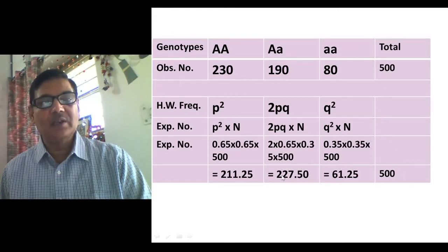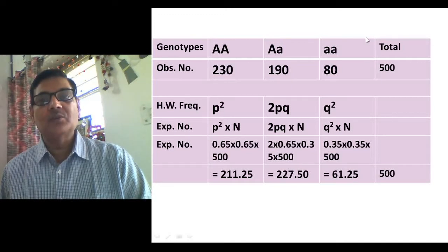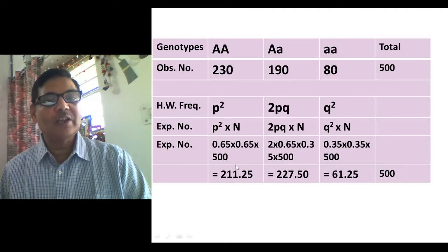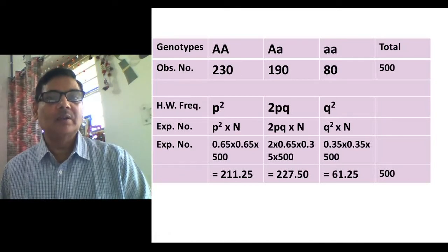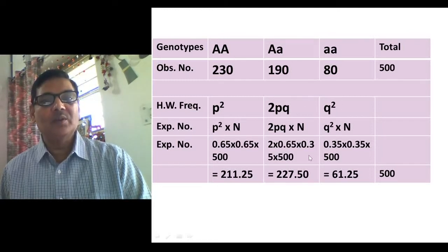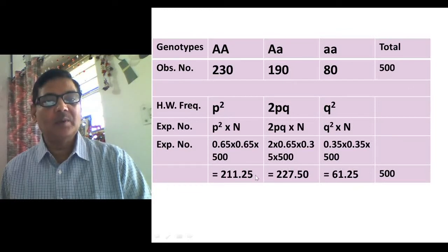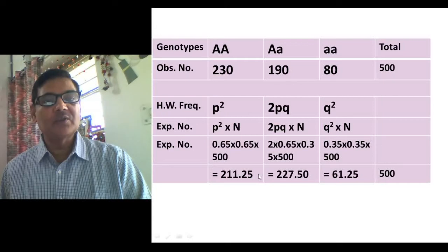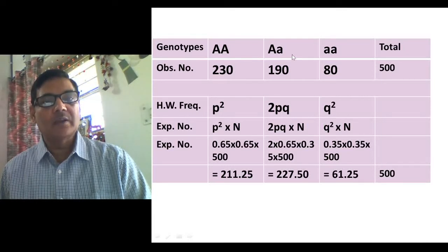If you sum the expected numbers, the total should match the observed total — if so, your calculation is correct. When you have both observed and expected values, you can test whether the population is in Hardy-Weinberg equilibrium by assessing whether the difference between observation and expectation is significant or non-significant. For that purpose you calculate chi-square, which I have already explained in the context of Hardy-Weinberg equilibrium testing. Now I am going to take up another example.